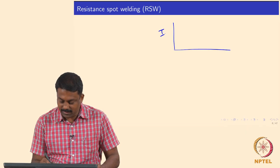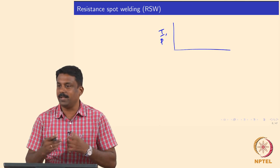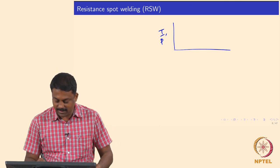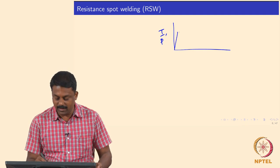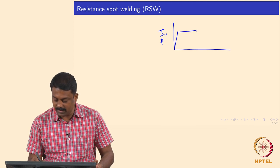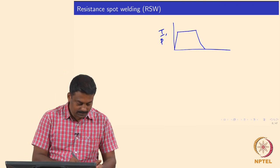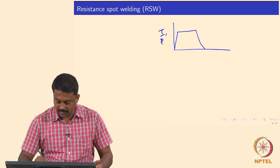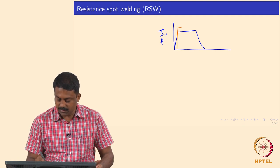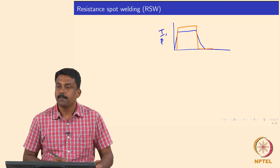We will start from last class where we looked at the typical resistance spot welding thermal cycle. For a simple thermal cycle, you have current or load — it is important to keep the two faying interfaces together. The load cycle starts first, and once the required load is achieved, the current starts forming. The current cycle follows accordingly.